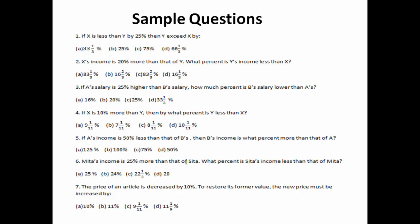These questions are pretty simple but students still make mistakes. A common mistake is that, for example, the first question says 'if x is less than y by 25%,' and students consider x equal to 100 and y equal to 125. They think that if y is 25% greater than x, then x will also be 25% less than y, so they mark 25% — which is wrong.